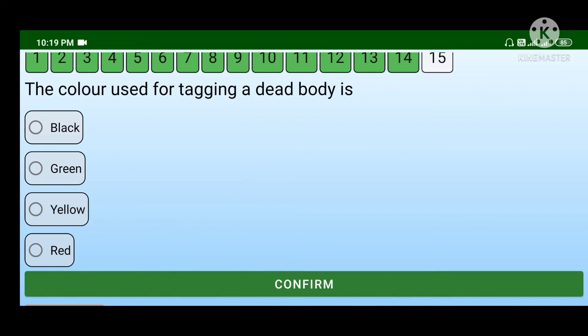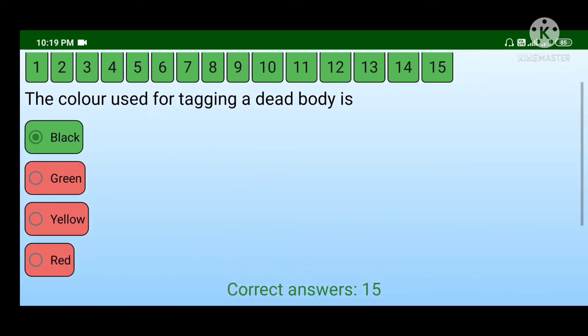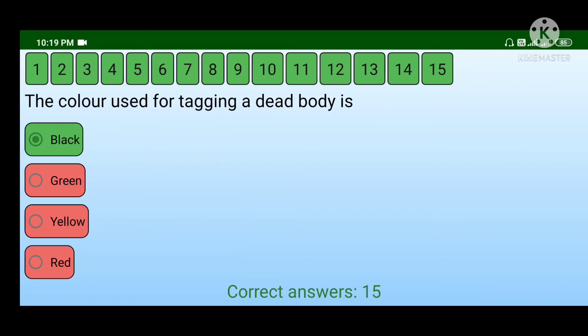The color used for tagging a dead body is black, green, yellow, or red. Black is used for dead bodies. Yellow is used for minor injury, green for minor problems, and red for urgent cases requiring immediate replacement.